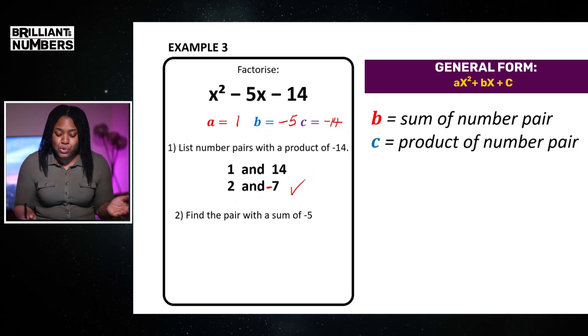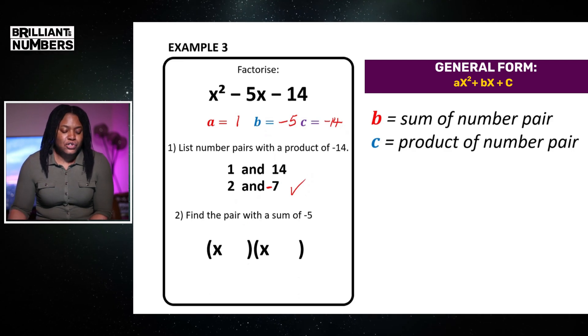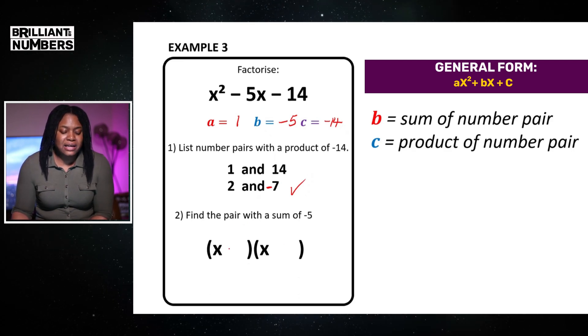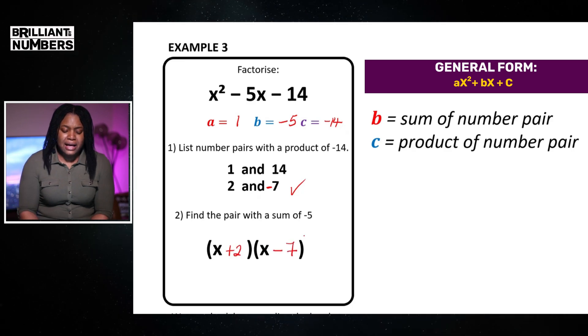Now that I've done that all, I just simply need to put them in my brackets. So, one bracket will be x add 2 and x minus 7.